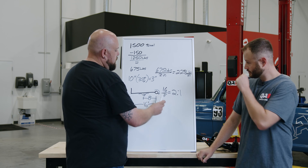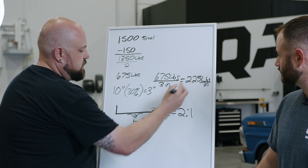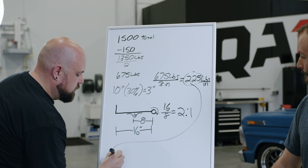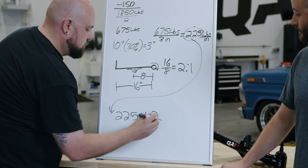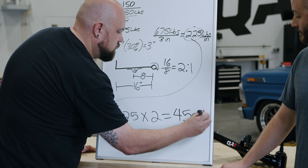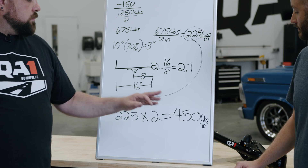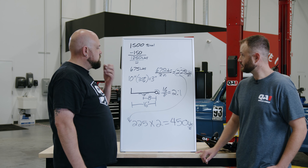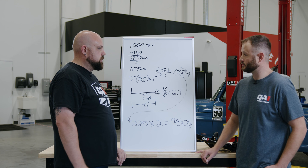Because we've got two times the leverage on the shock, we simply multiply our previously calculated spring rate by two. So 225 times two equals 450 pounds per inch. That is the spring rate I would recommend for this setup. If you called up and said your front end weighs 1500 pounds with this control arm geometry, I would say a 450-pound spring is going to work really well.